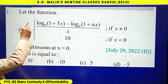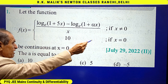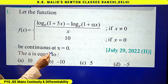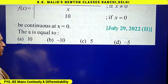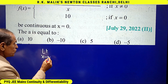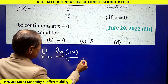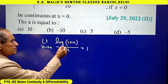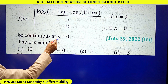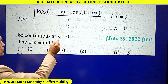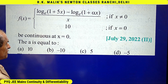In this question, f(x) is given as some expression when x is non-zero, and 10 if x equals 0, and the function is continuous at x = 0. We need to find the value of α. It's a straightforward question — you just need to remember the formula: limit as x tends to 0 of log(1 + x) / x = 1 (base e). Since the function is continuous at x = 0, the limit as x tends to 0 must equal the value of the function, which is clearly 10.